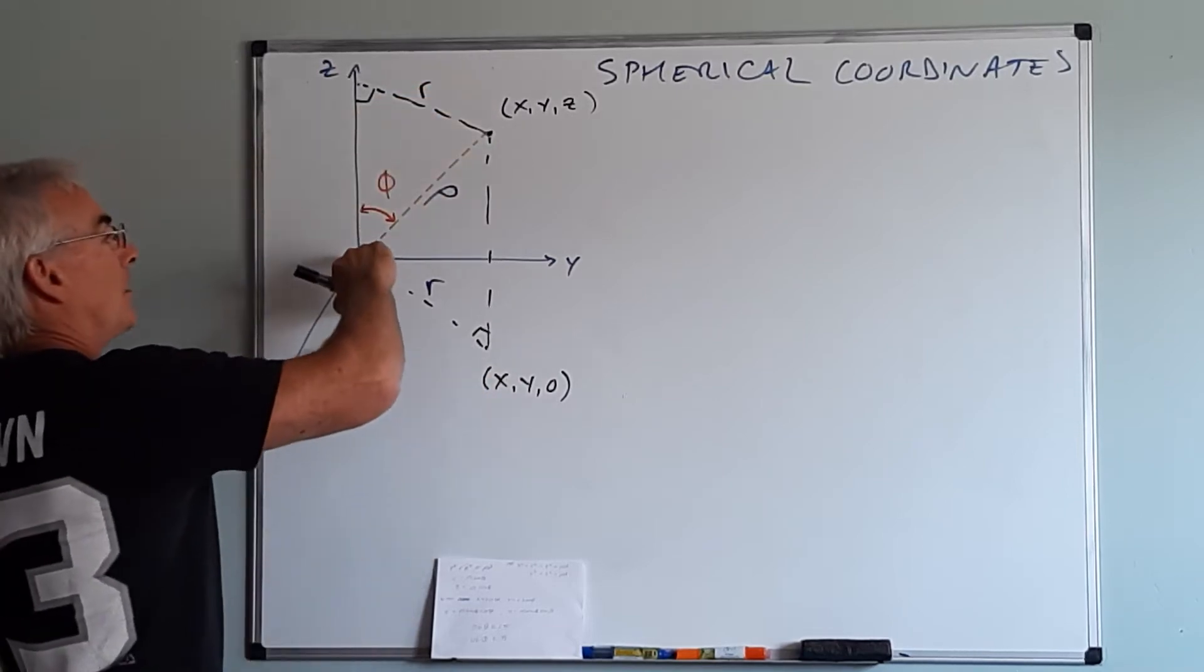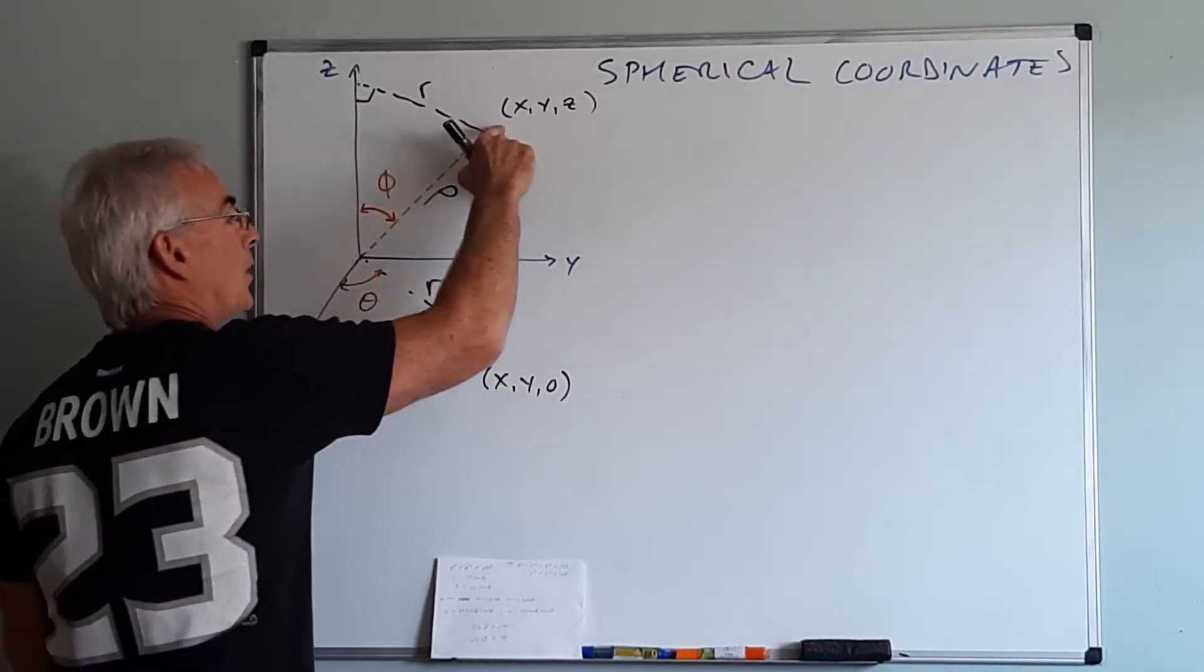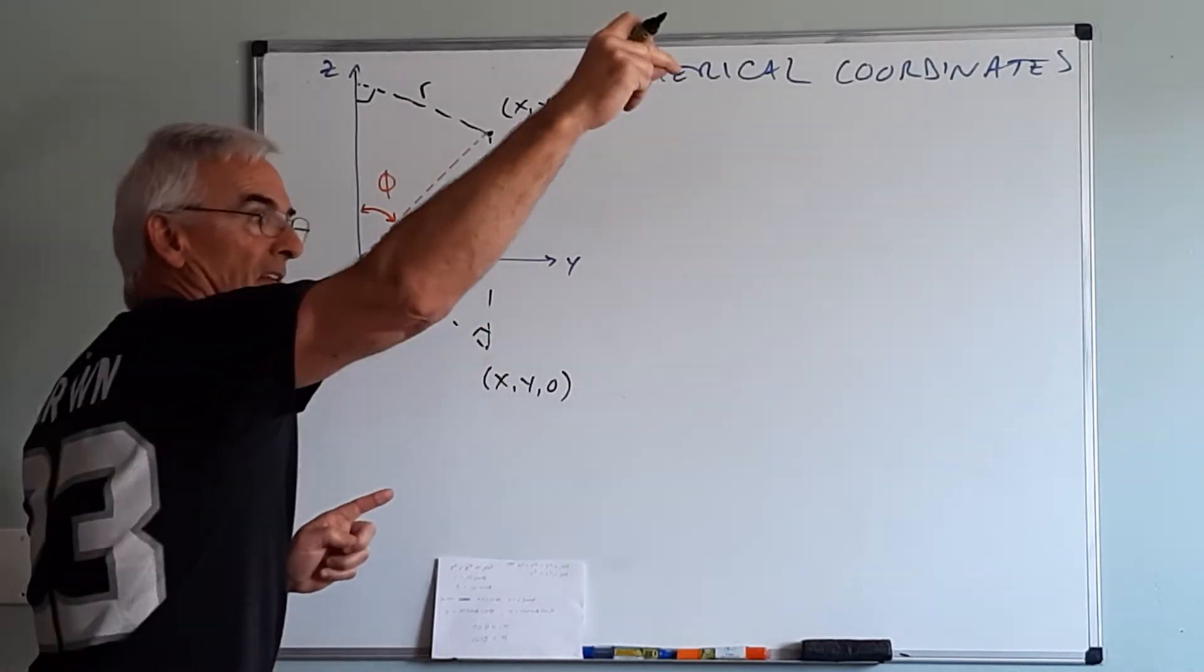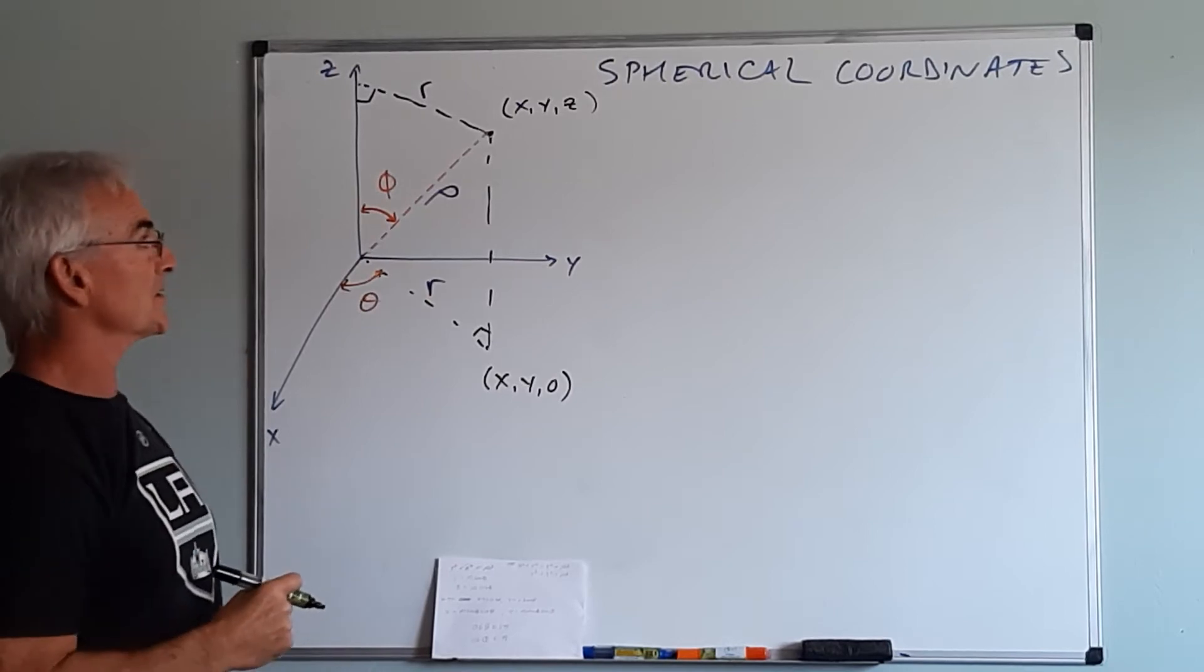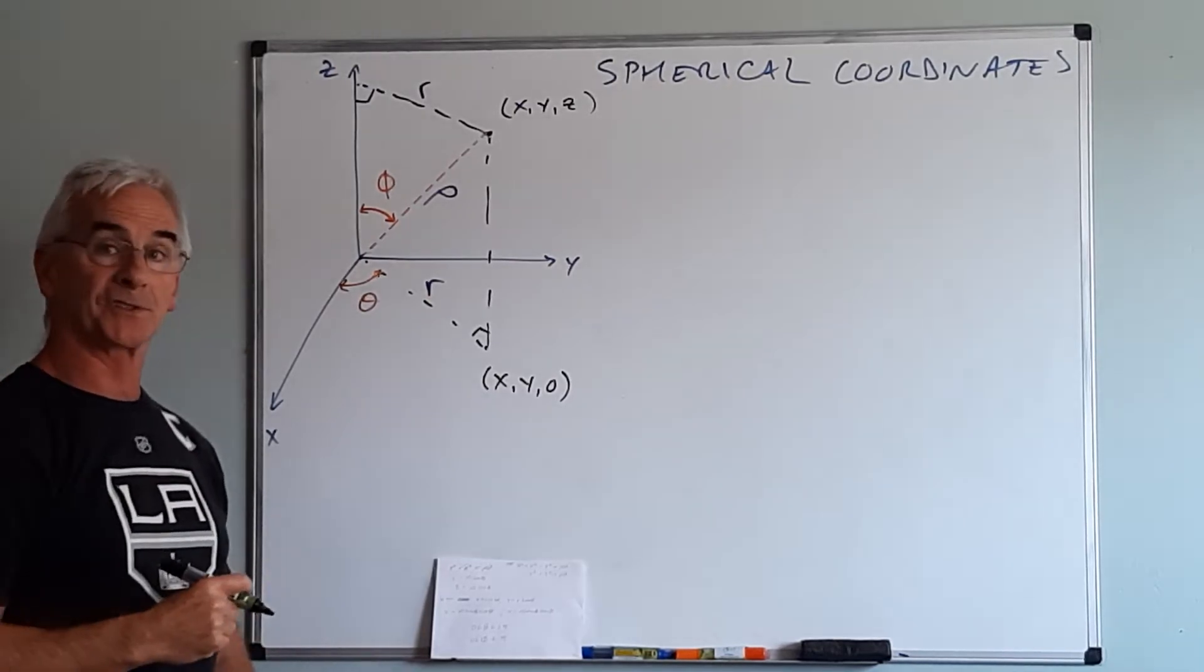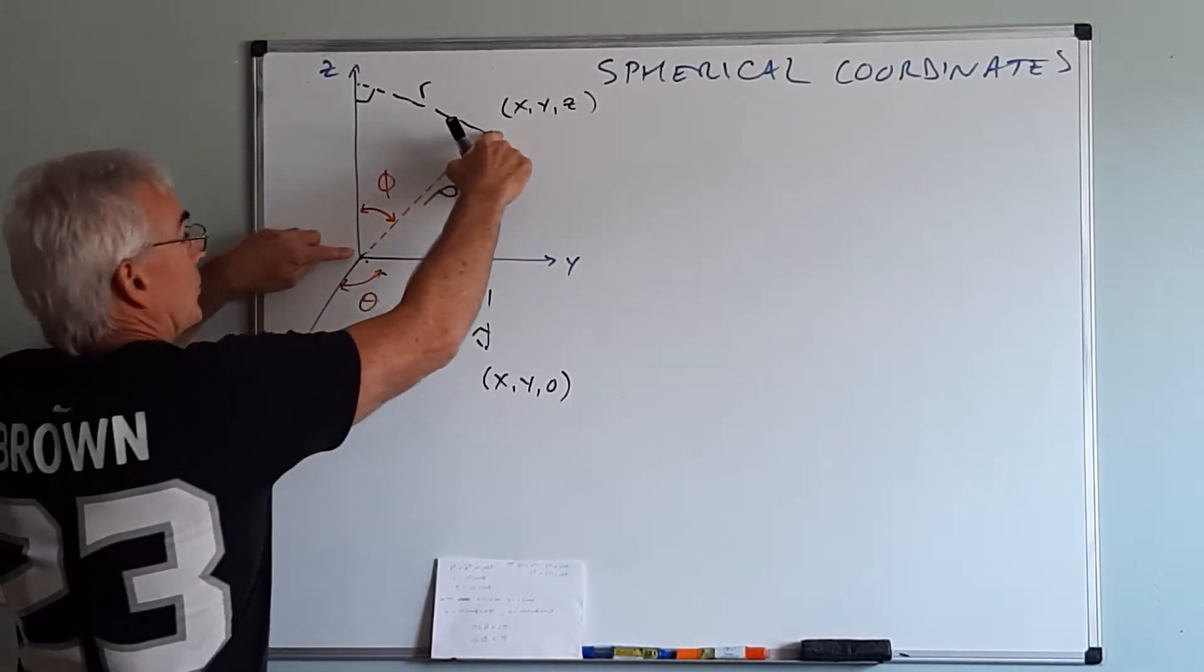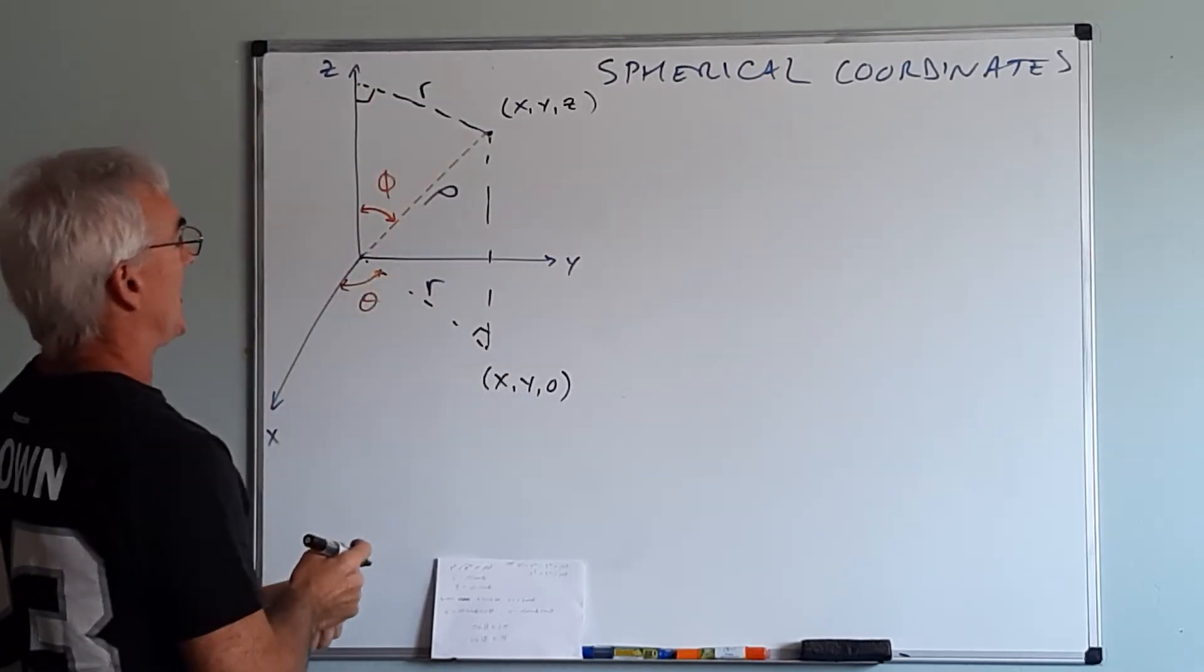If I draw from the origin to that point then I have basically a line segment in three dimensions, let's call that length rho. Now you recognize rho is the symbol we use for the radius of a sphere. So this basically would be like a sphere if I went all the way around.